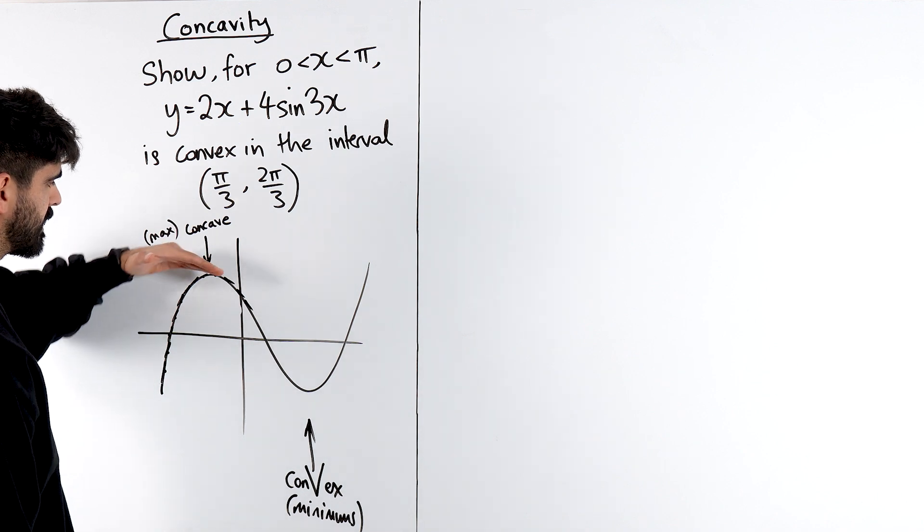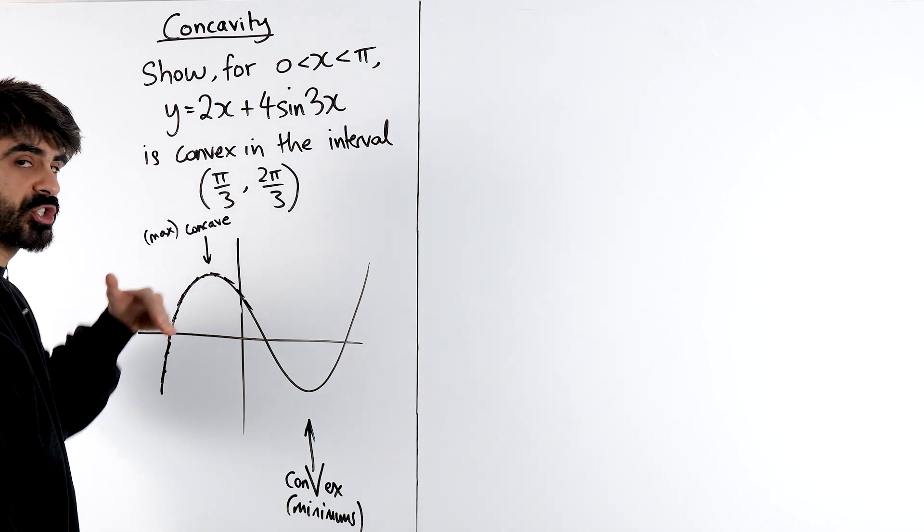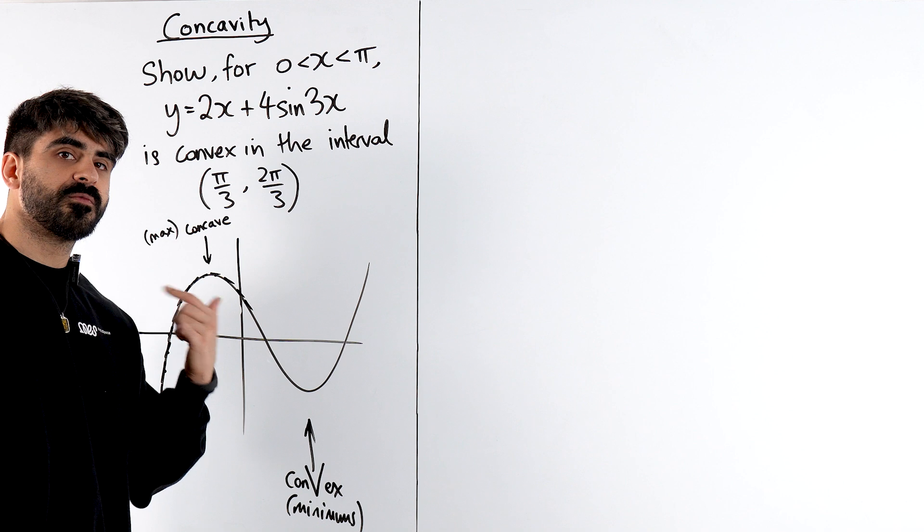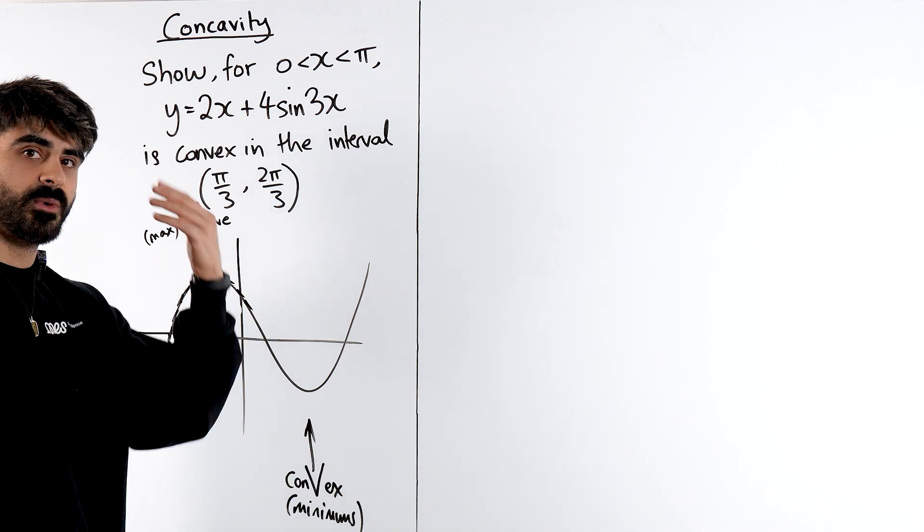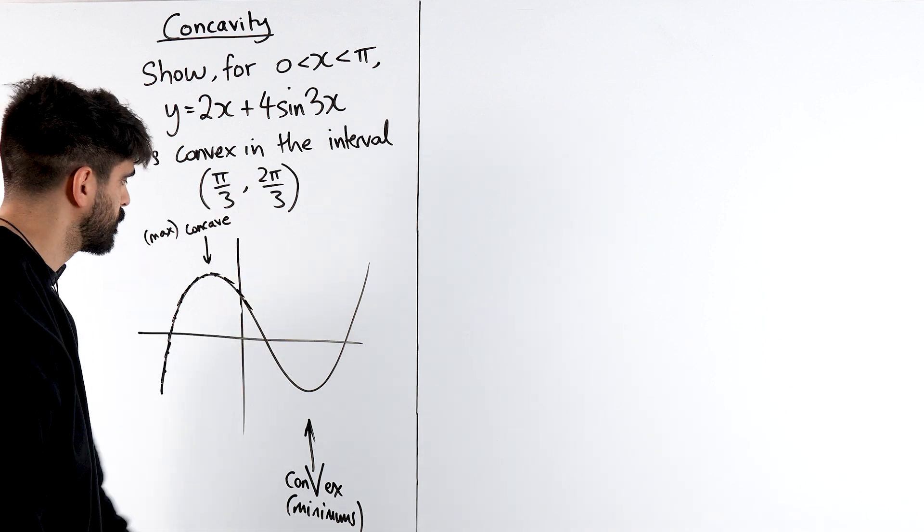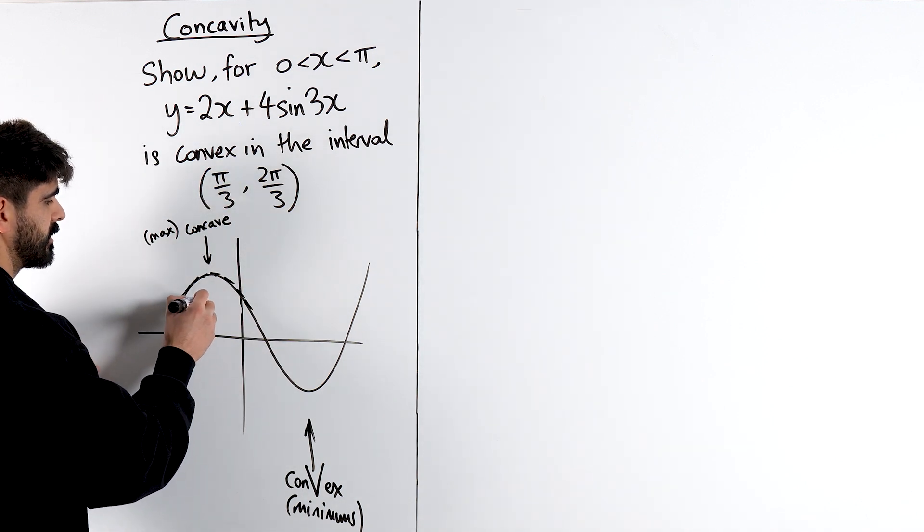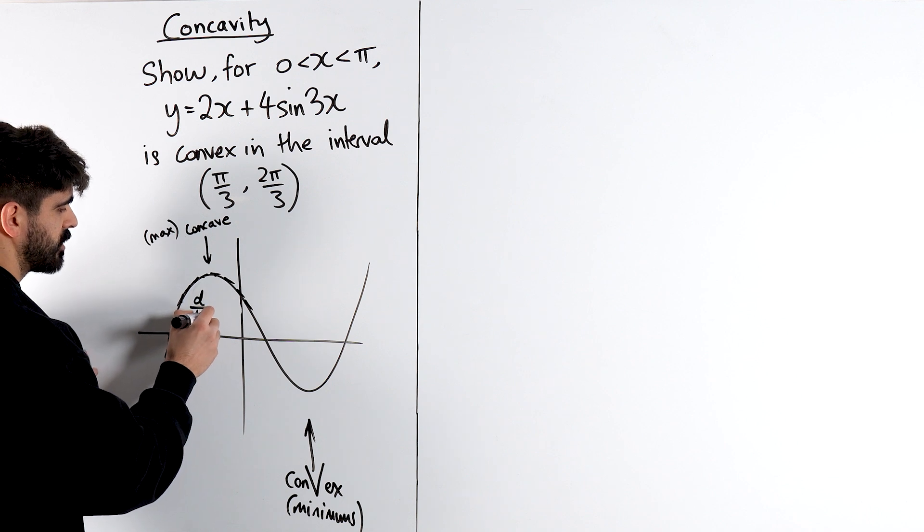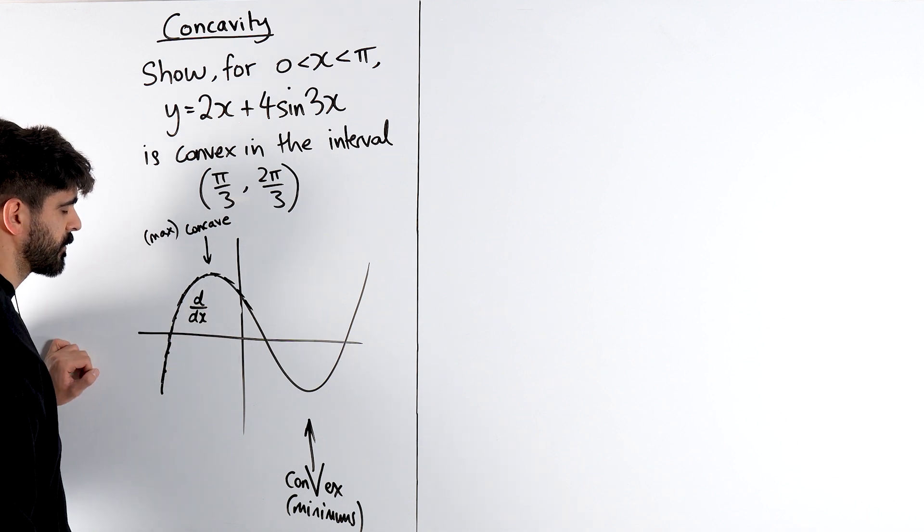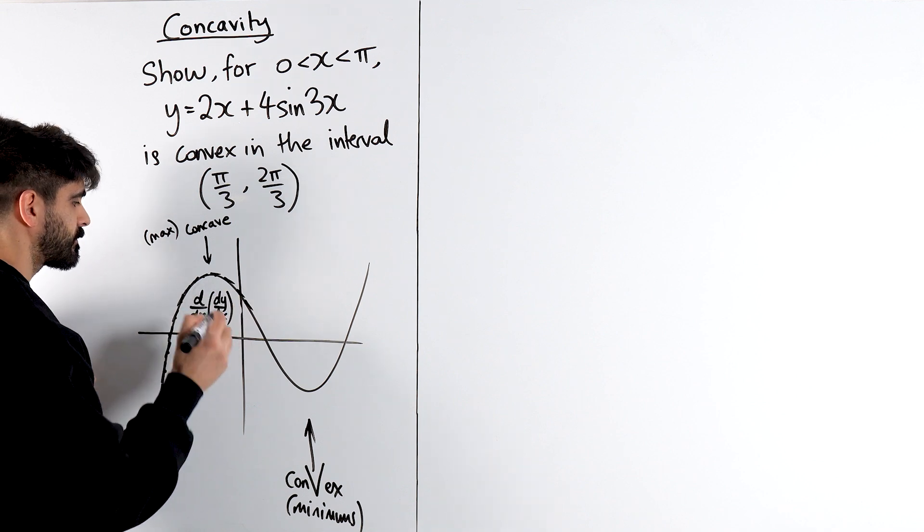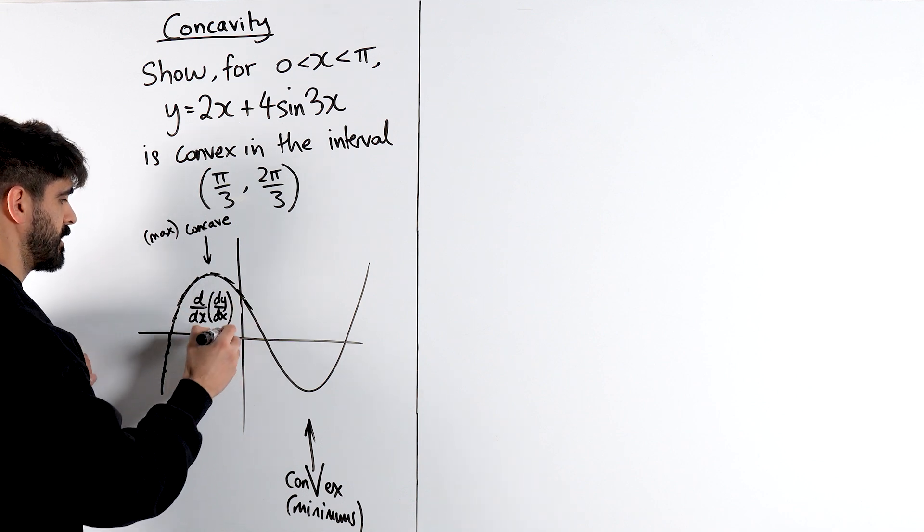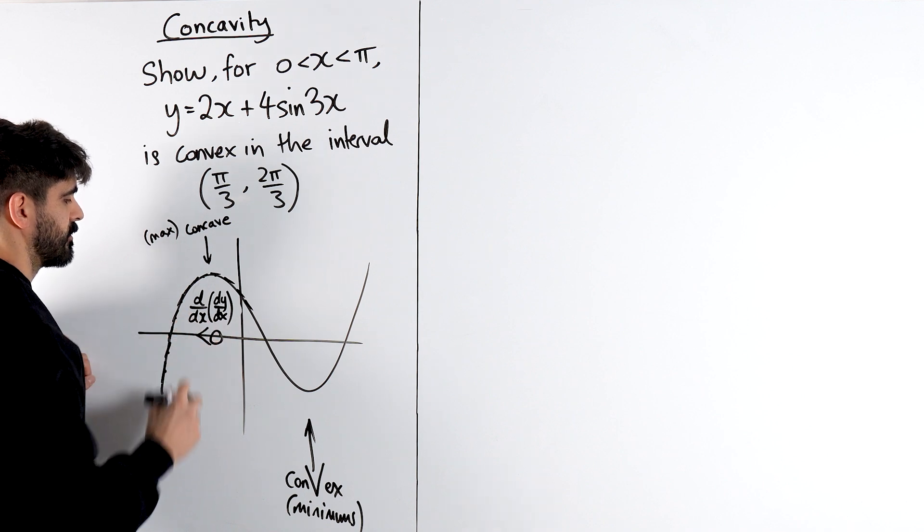And that's very important in terms of our understanding. The gradients are getting smaller, which means the rate of change of the gradients is negative, meaning that they're getting smaller. We're subtracting from those gradients. Now how do we define that? We're saying the rate of change, the rate of change of the gradients, which is dy/dx is less than zero. Is less than zero.